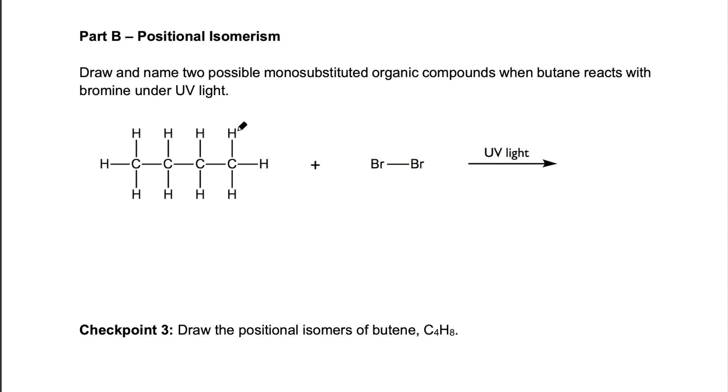The second kind of isomerism is positional isomerism. This is when the functional group can be positioned at different parts of the carbon backbone. One of the reactions of alkanes is substitution. So when an alkane like butane undergoes reaction with bromine in the presence of UV light, we can replace one of the hydrogen atoms with a bromine atom. So if I choose to do substitution at the end carbon, I will get something like that. So always remember each carbon forming four bonds. The rest are hydrogen.